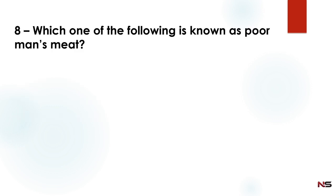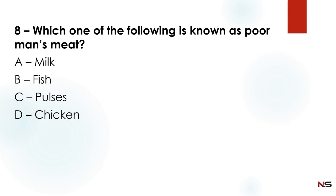Which one of the following is known as poor man's meat? Option A: milk, Option B: fish, Option C: pulses, Option D: chicken. The correct answer is pulses.